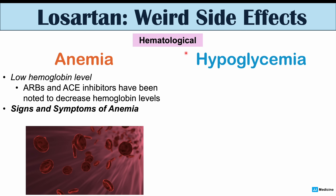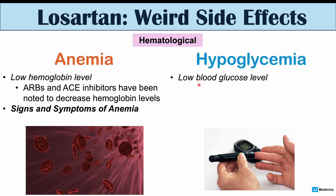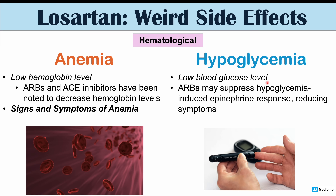Another hematological side effect is hypoglycemia — a low blood glucose level. Normally, low blood glucose triggers symptoms like jitteriness and sweating via epinephrine release. However, ARBs like Losartan appear to suppress this epinephrine response. So even if you have hypoglycemia, you may not experience its typical symptoms, because ARBs are reducing the hypoglycemia-induced epinephrine response. At least 10% of patients may get hypoglycemia from Losartan use, and this is more likely in patients who already have diabetes.